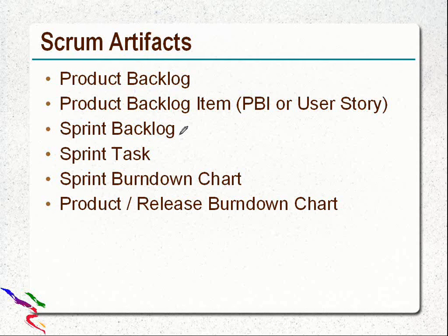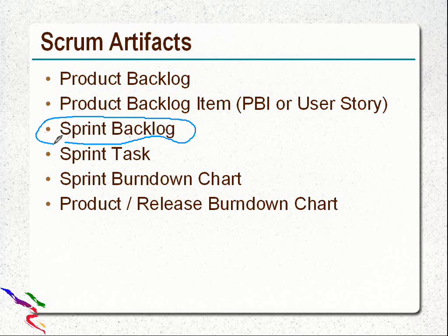Now, Scrum artifacts. We have already seen the product backlog. A product backlog item is the individual item in the product backlog, also known as a user story — this is a single task that can be completed within one sprint. Then there is the sprint backlog, which contains all the user stories for one sprint that is currently going on. Then sprint tasks — the individual user stories should be broken further down into individual tasks by the team.